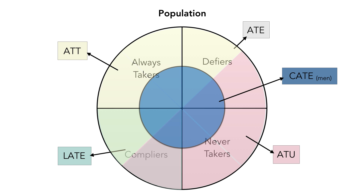So in general, these are the relationships between all of these different kinds of average treatment effects: the local average treatment effect, the conditional average treatment effect for men, the conditional average treatment effect for women, the average treatment on the treated, the average treatment on the untreated, and the average treatment effect overall.